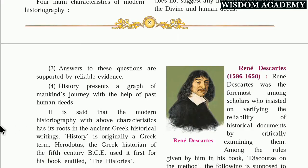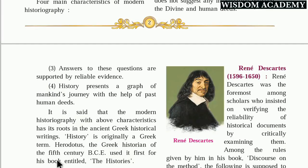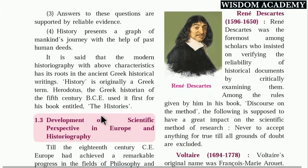Modern historiography with these characteristics has its roots in ancient Greek historical writing. Earlier, people in Europe were not studying history scientifically; later, universities developed separate history departments. History is originally a Greek term. Herodotus, the Greek historian of the 5th century BCE, used the word 'history' for the first time in his book entitled 'The Histories.'